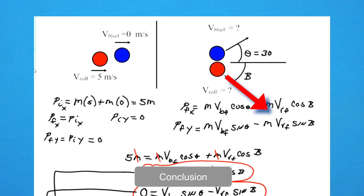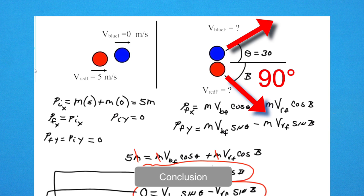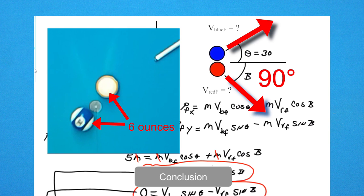No matter what angle the cue ball approaches the object ball, the angle between the object ball's direction and the cue ball's direction after the collision will always be 90 degrees. Physics explains that this is true because the mass of both balls is identical.